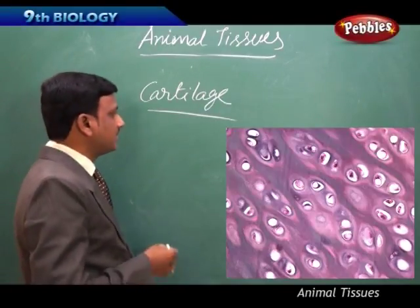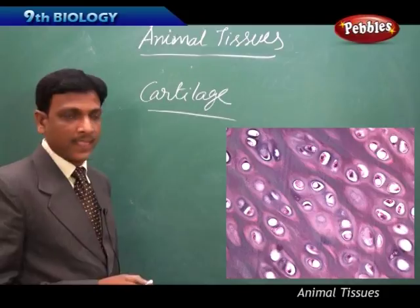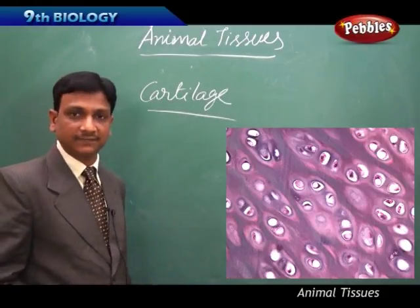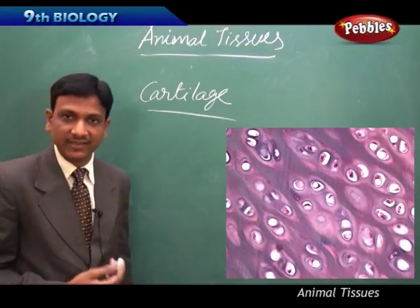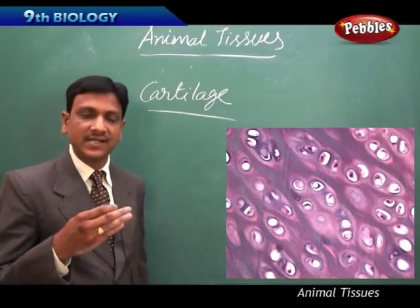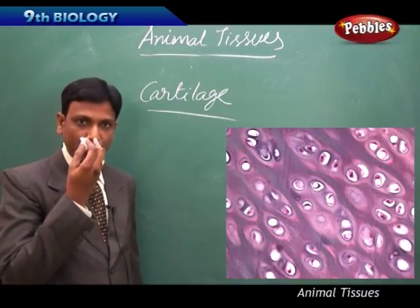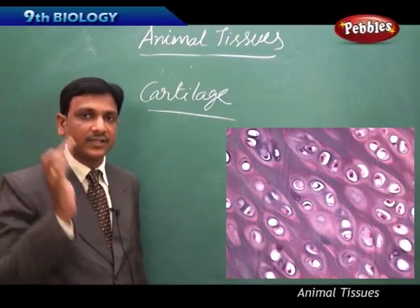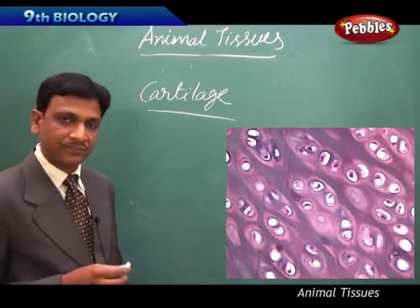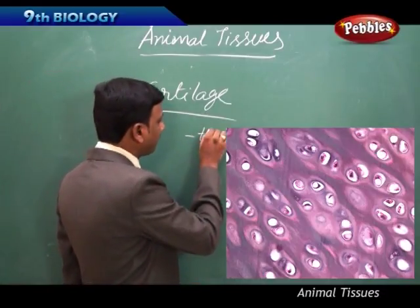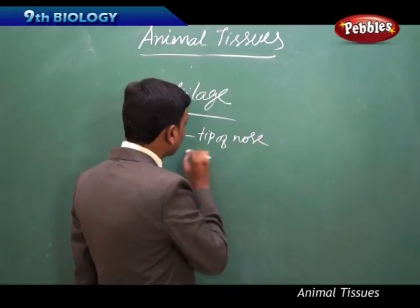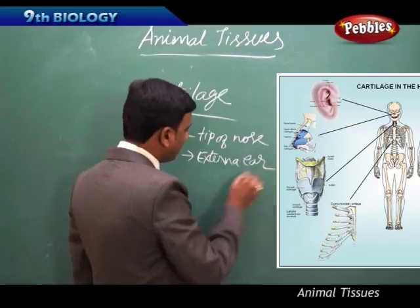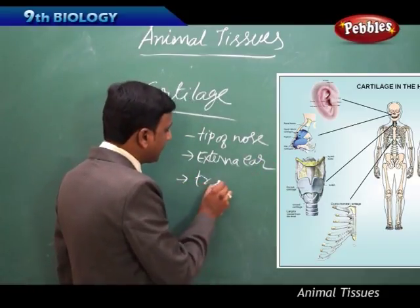Cartilage is an elastic material. It forms the skeleton of sharks and some fishes. Even in humans, we find cartilage in different parts of our body, like the tip of our nose — this part is made up of cartilage, which is flexible — and even the external ear is also made up of cartilage.